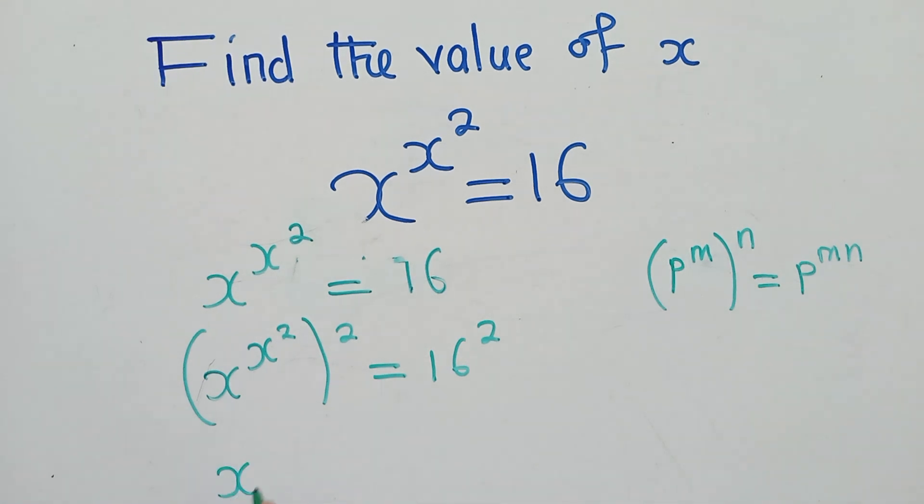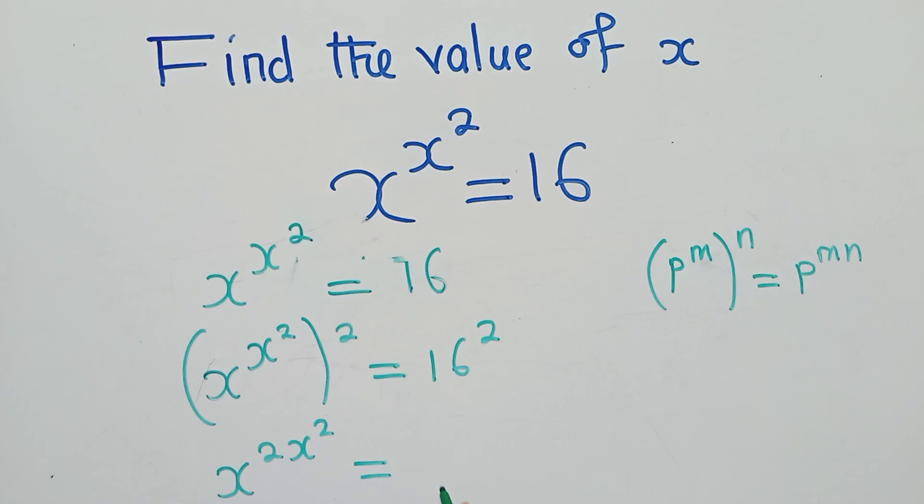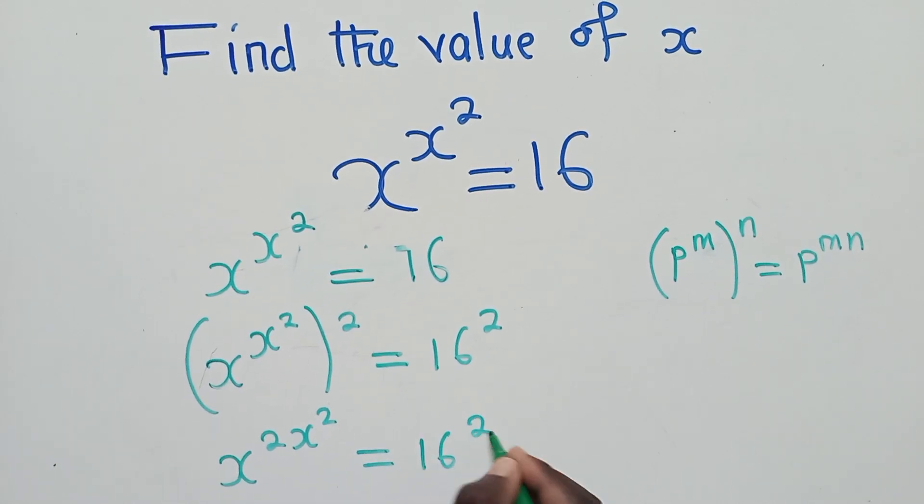We're going to have x^(2x^2) = 16^2. So we're almost there.